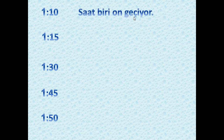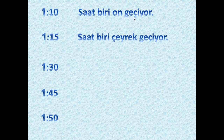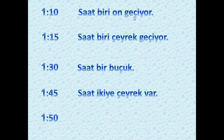Let's have some examples. 'Saat biri on geçiyor' — it is ten past one. 'Saat biri çeyrek geçiyor' — it is a quarter past one. 'Saat bir buçuk' — half past one. 'Saat ikiye çeyrek var' — a quarter to two. 'Saat ikiye on var' — ten to two.